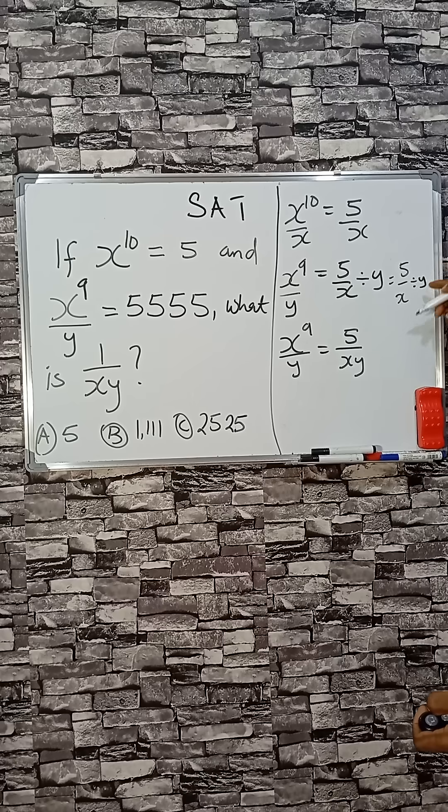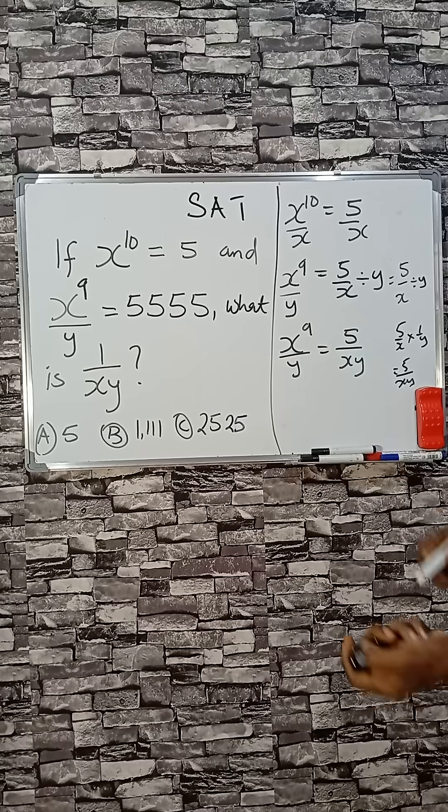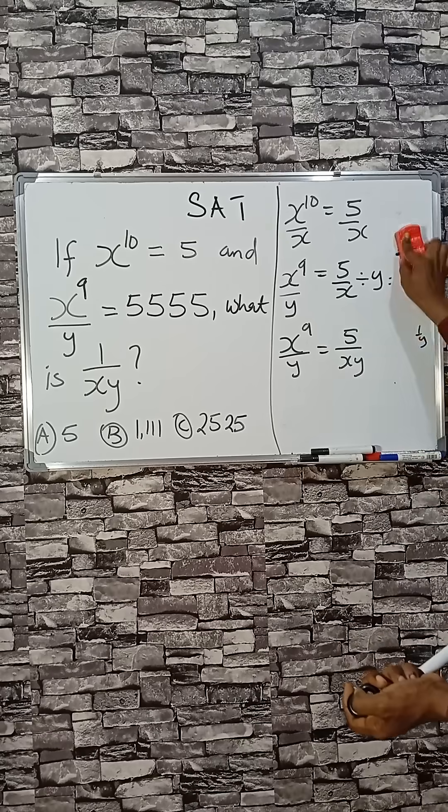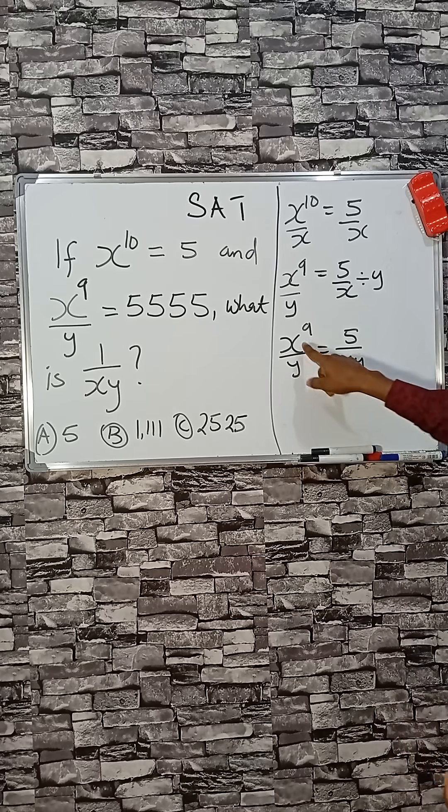Then divided by y. If I need to change this sign to multiplication, I will take the inverse of this, so that will be 5 divided by xy. So that's how I got here.